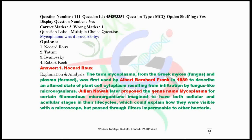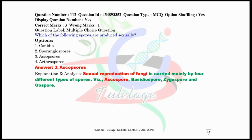Question number 111: Mycoplasma was discovered by — the correct option is Nocard and Roux. Question number 112: Which of the following spores are produced sexually? Obviously, ascospores. As we all know, fungi have four different types of sexual spores: mainly ascospores, basidiospores, zygospores, and oospores. Since ascospores is present in the option, that is the correct answer.